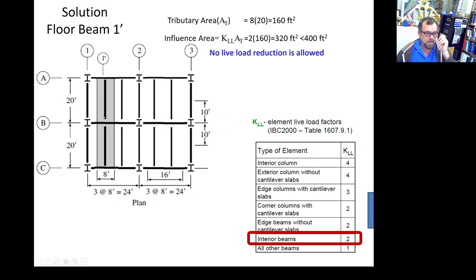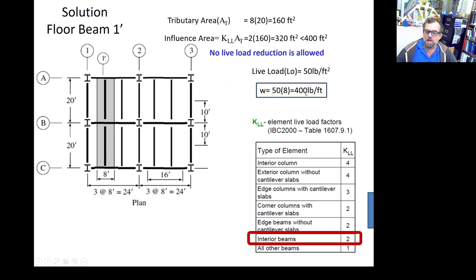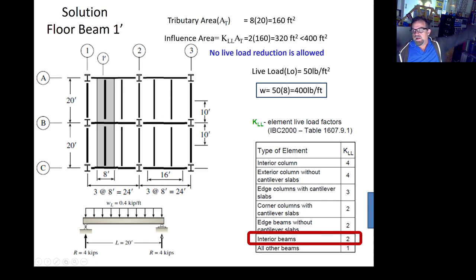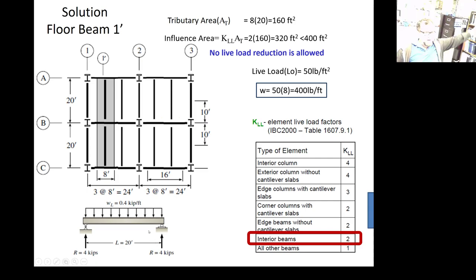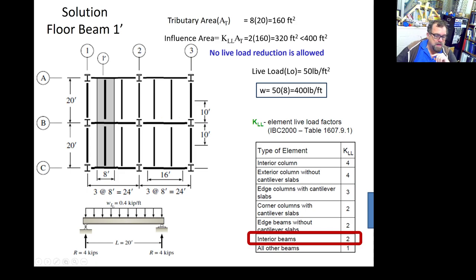So we calculate this floor beam as simply supported between two points. The tributary width is 8 feet, giving a distributed load of 8 times 50 equals 400 pounds per foot, or 0.4 kip per foot, over a 20-foot span. Each reaction equals 400 times 20 divided by 2 equals 4,000 pounds or 4 kip.